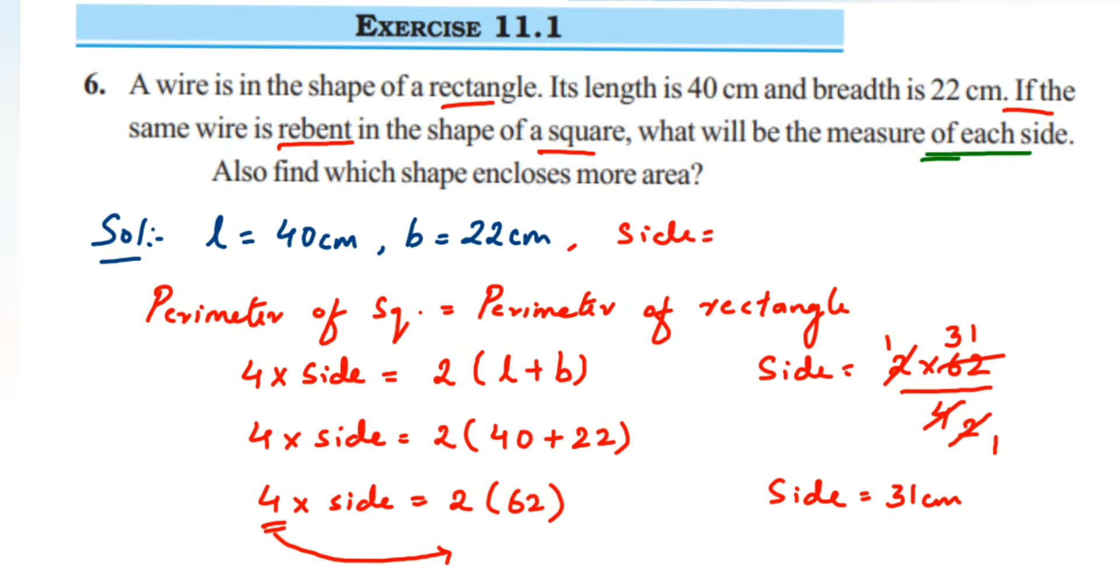Now second, they are asking which encloses more area - which covers more area, rectangle or square. Since we know all the measurements, we know length and breadth to find the area of rectangle, and we know side to find the area of square.